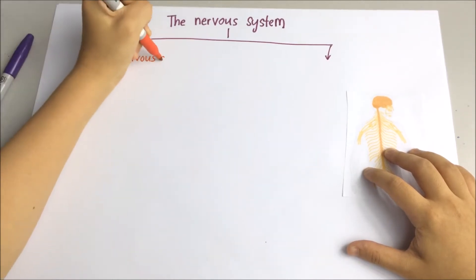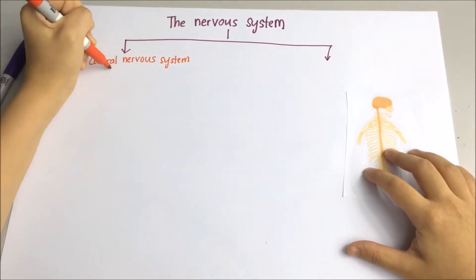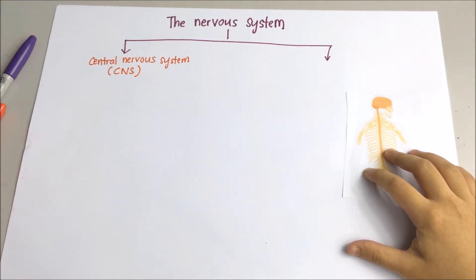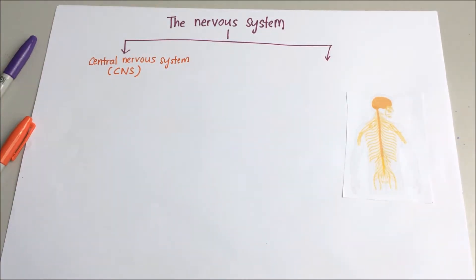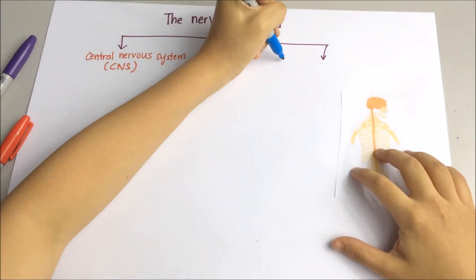Central nervous system and also peripheral nervous system.